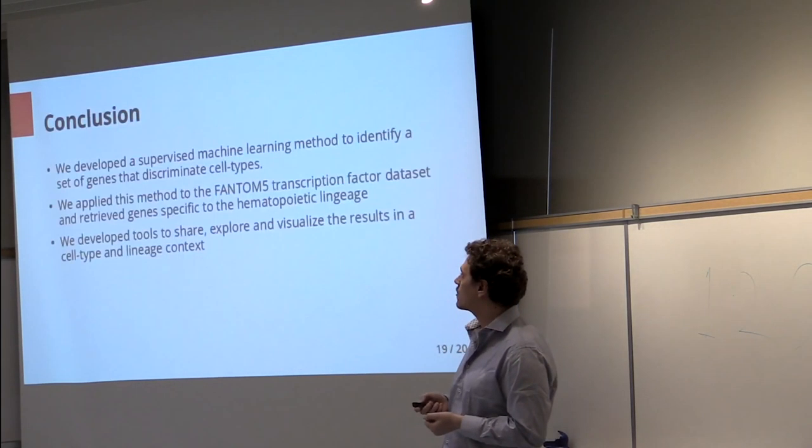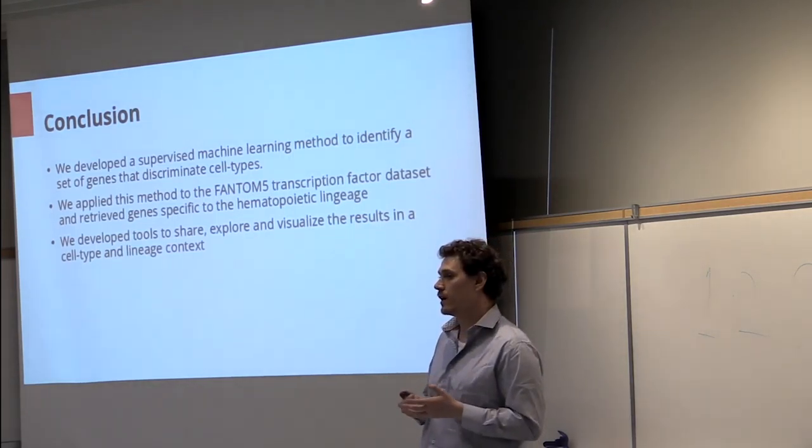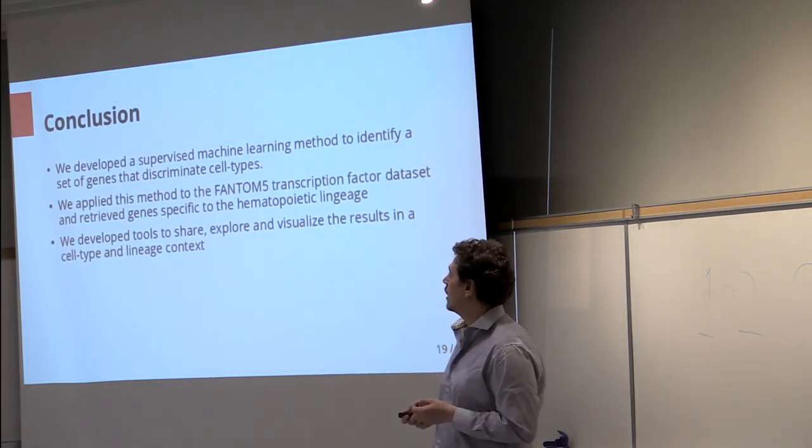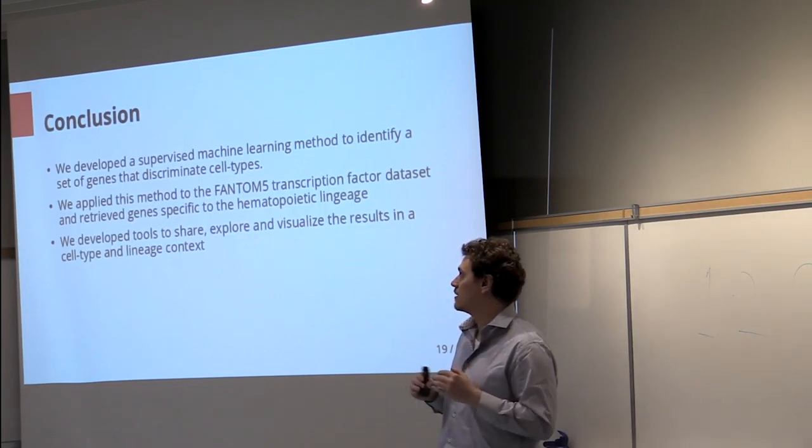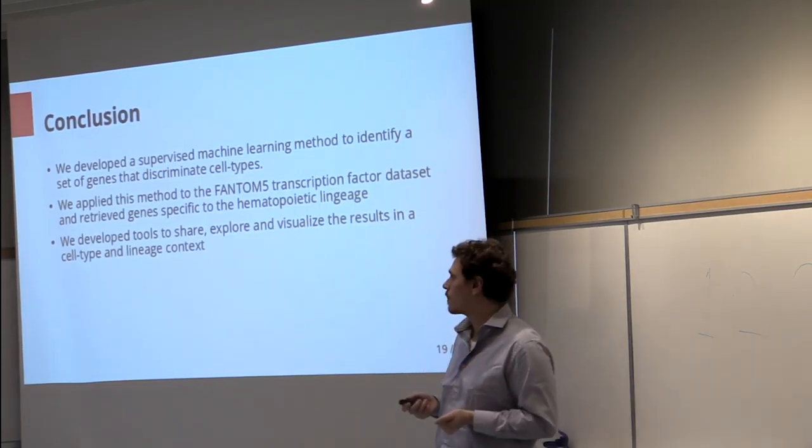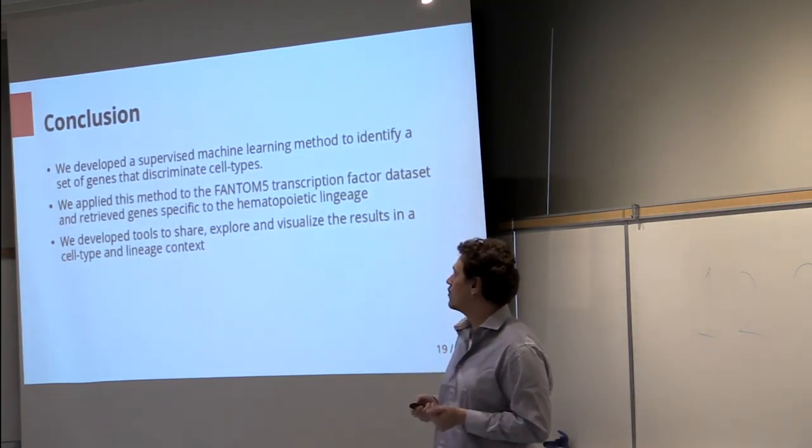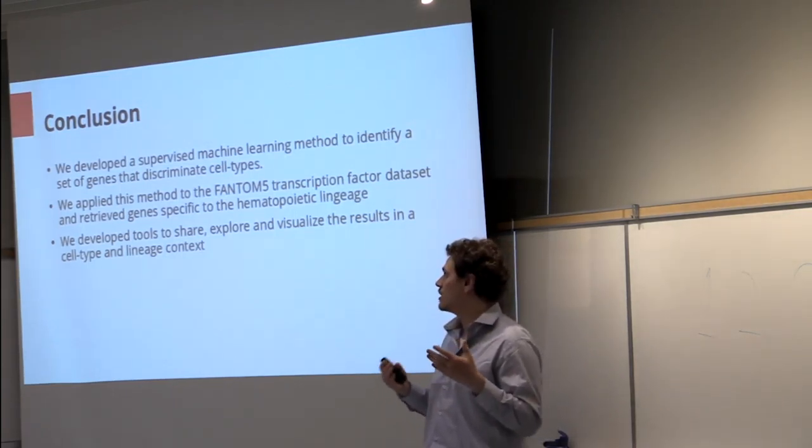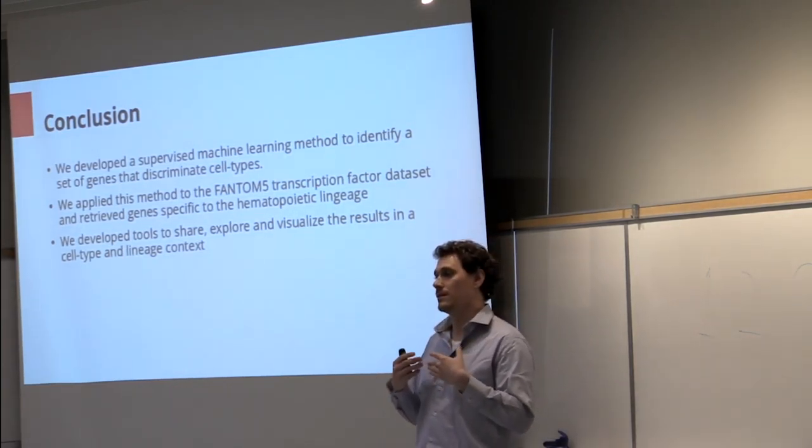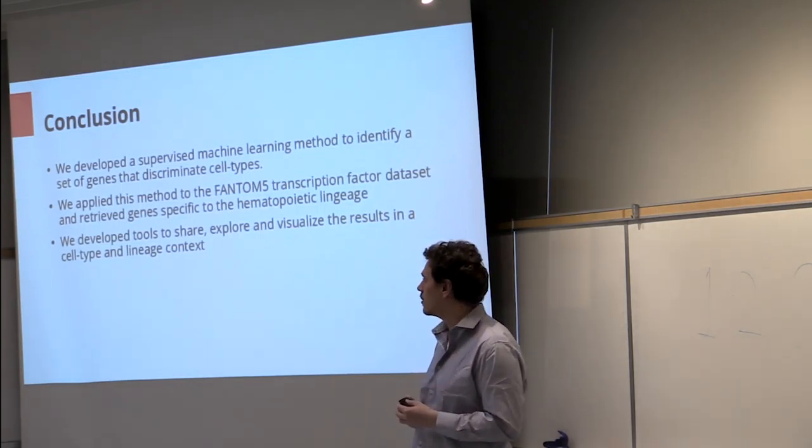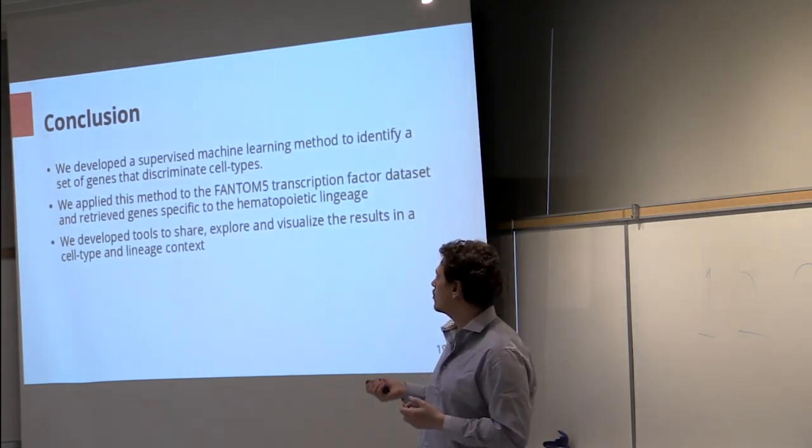So to conclude, we developed a supervised machine learning method to identify a set of genes that discriminate between samples. We applied this method to the FANTOM5 transcription factor dataset and retrieved genes that are specific to the hematopoietic cell lineage, SPI1 in particular, and we developed tools to share, explore, and visualize the results in a lineage context.